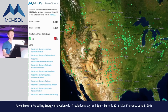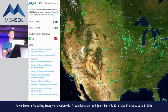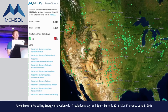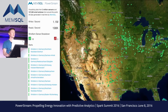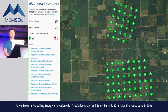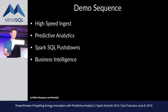Once the data is in MemSQL, you can do a lot of interesting things. The first thing that comes to mind is building applications on top of that data. The data is live, the data is streaming, and since MemSQL is a database you can build an application. Here's an example using Mapbox, a mapping application. You can embed it in your browser — it has an API — and you can build very dynamic applications. With PowerStream you can zoom in, see individual turbines, and see all the sensor values in real time.